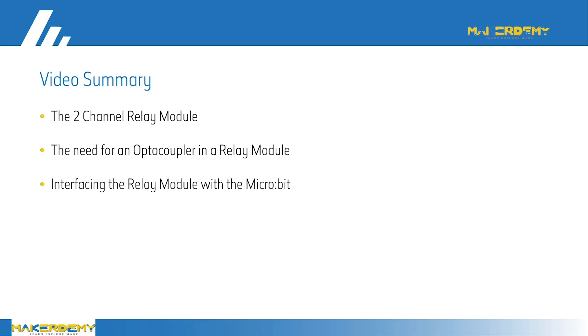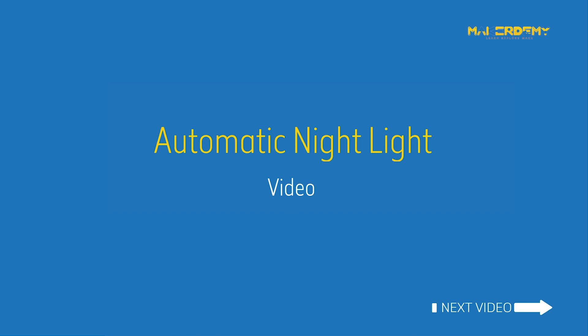Summary. In this video, we covered the following topics: the two-channel relay module, the need for an optocoupler in the relay module, and interfacing the relay module with the micro:bit. In the next video, we will create an automatic night light project with the micro:bit using the relay module.